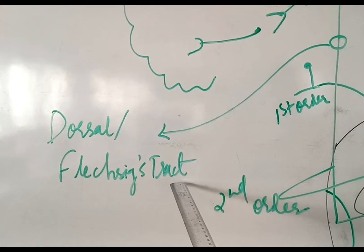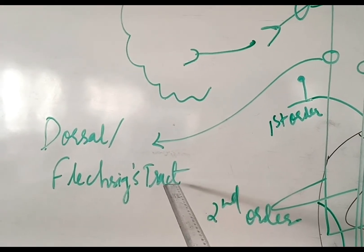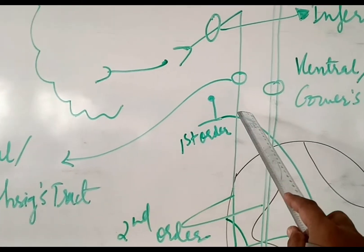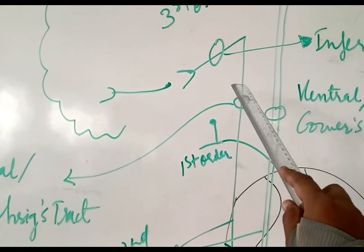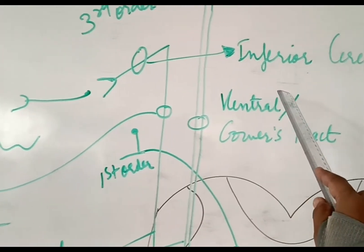Now this tract remains on the same side. It reaches the medulla on the same side, thus it has only uncrossed fibers. These fibers ascend upwards and reach the inferior cerebellar peduncle as shown in the diagram.